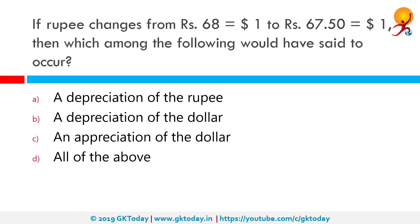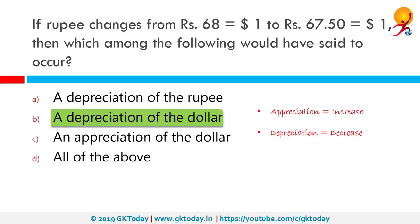If the rupee changes from ₹68 = $1 to ₹67.50 = $1, which among the following would be said to occur? Currency appreciation means an increase in the value of currency, while currency depreciation is a fall in the value of a currency in a floating exchange rate system. In this case, the value of the dollar fell with respect to the rupee, hence it depreciated. The correct answer is a depreciation of the dollar.